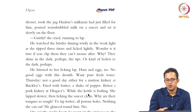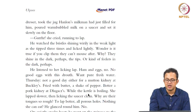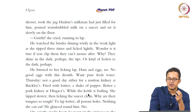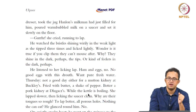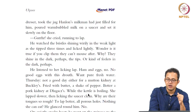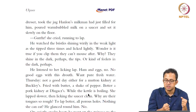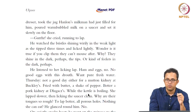The milk metaphor comes back again. He has a little conversation with the cat, tries to give her some milk — takes a jug Hanlon's milkman had just filled for him, poured warm bubbled milk on a saucer and set it slowly on the floor. He watched her bristles shining warily in the weak light as she lapped three times and licked lightly. 'Wonder is it true if you clip them they can't mouse after. Why? They shine in the dark perhaps, the tips.' Look at the language — 'warm bubbled milk' — 'bubbled' isn't really a word but it gives you the effect; the real temperature of the milk is conveyed. Mouse becomes a verb — to mouse something is to kill a mouse, which is the whole purpose of having a cat in the domestic setting.